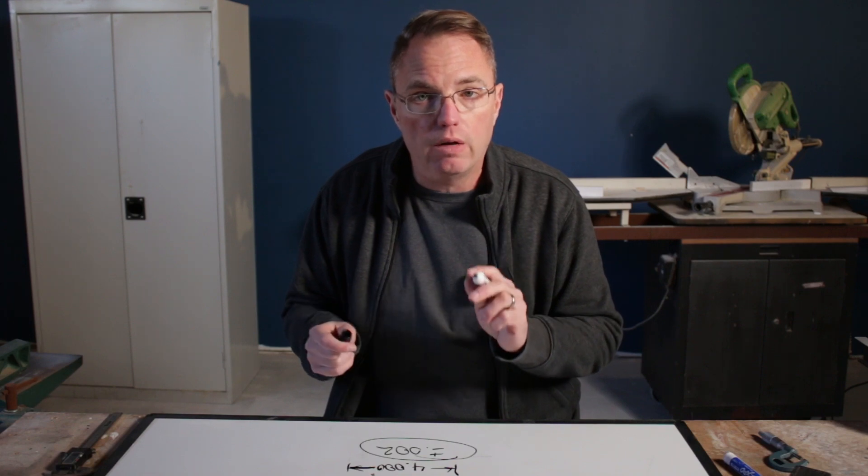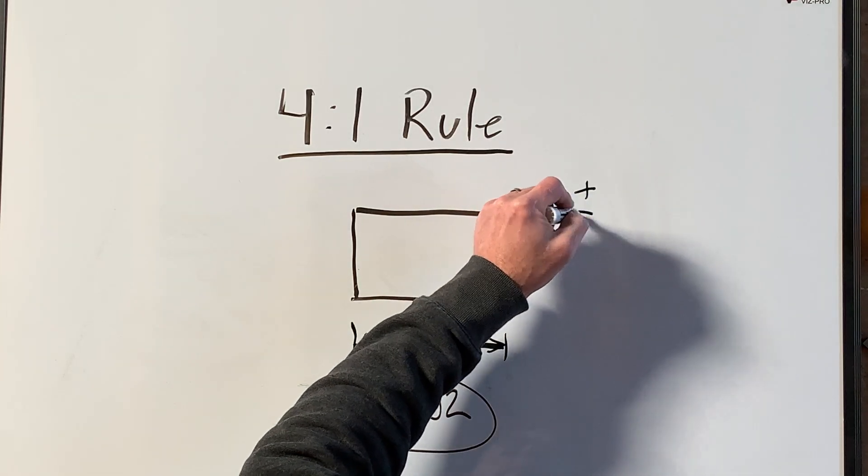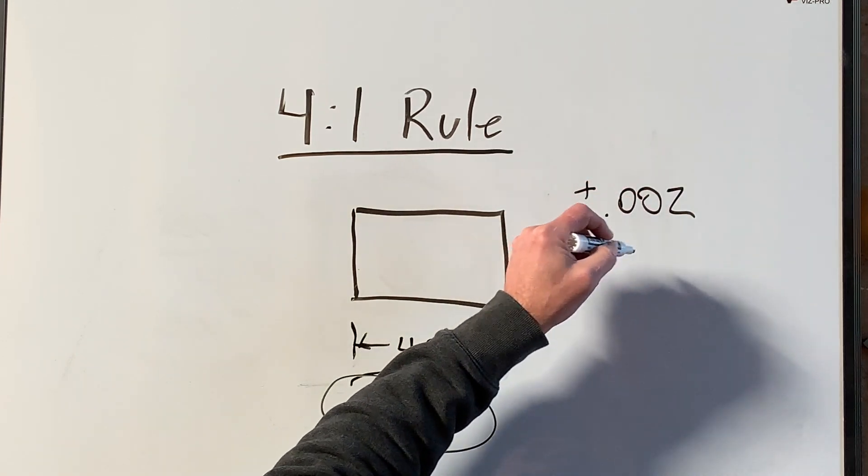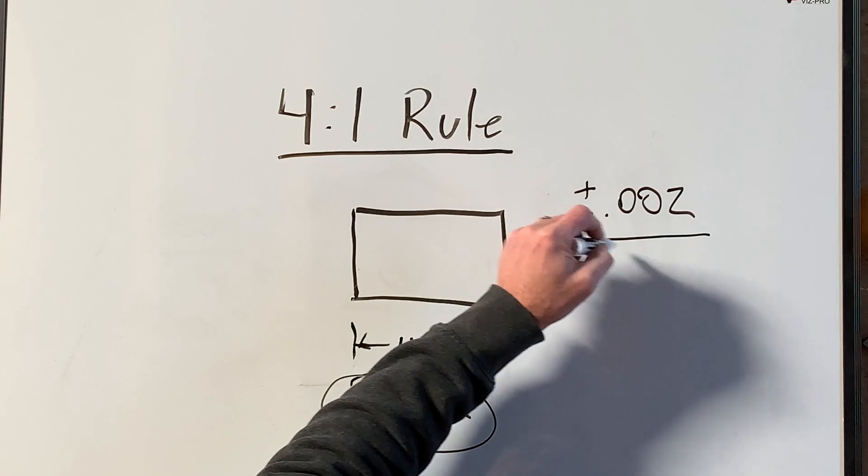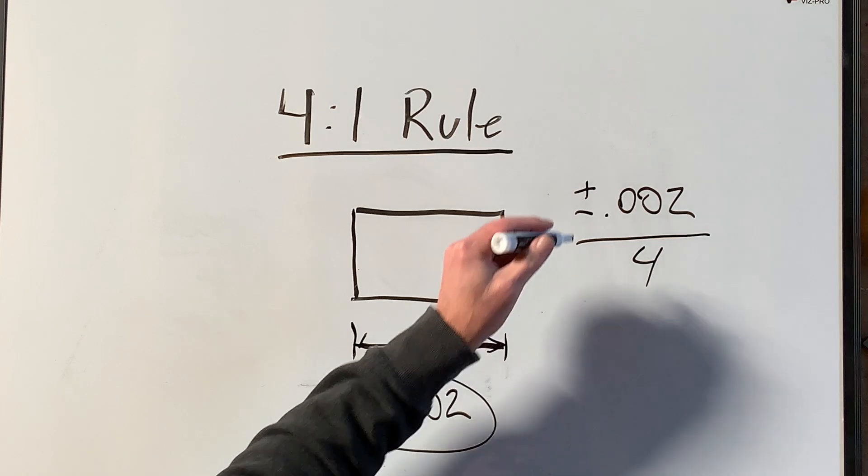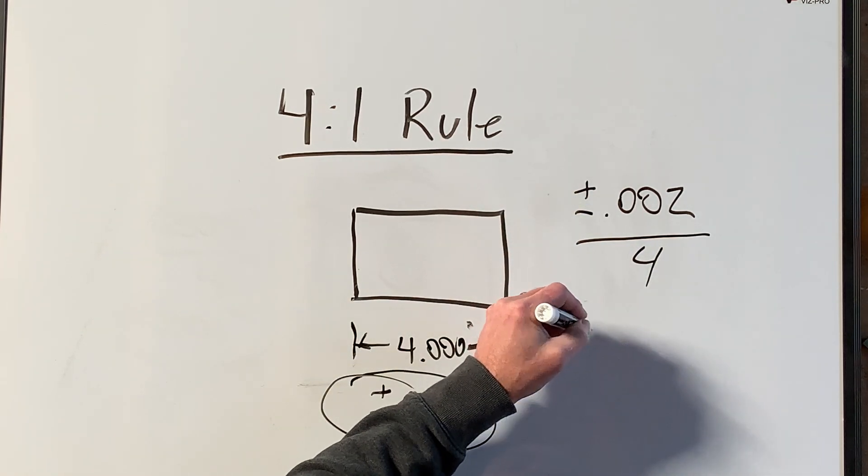So we have plus or minus two thou, and we divide that by four for the four to one rule, which gives us a plus or minus of a half a thou, or five ten-thousandths of an inch.